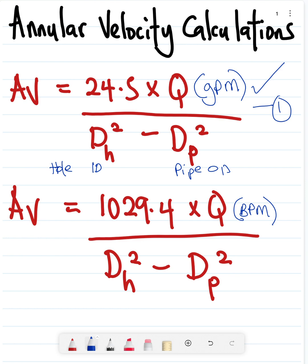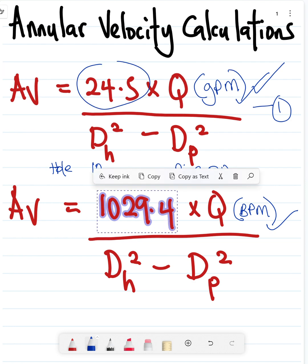If you use the right numbers with barrels per minute here you get the same value. If you use gallons per minute here, this constant takes care of the conversion.